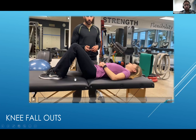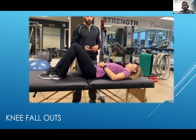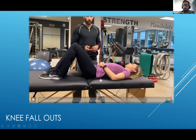The next exercise is the knee fallout. This stems from the transverse abdominus contraction — we always start there, just like with sit-ups. If you're strong in the center, we can move our extremities better, and that's what this exercise focuses on.